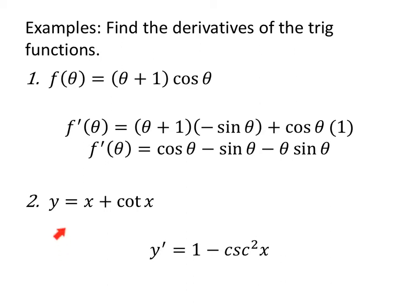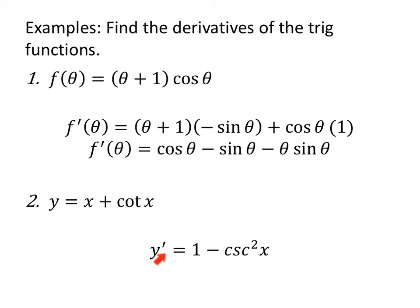To take the derivative of y equals x plus cotangent of x: the derivative of x is 1. The derivative of a co-function is negative. The derivative of cotangent of x specifically is minus cosecant squared of x. That's it — walk away.